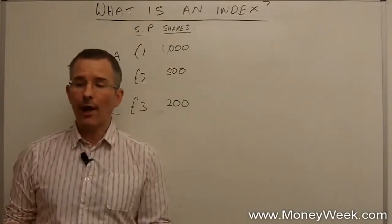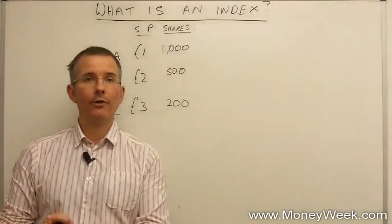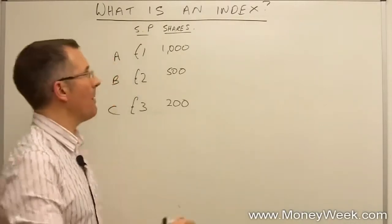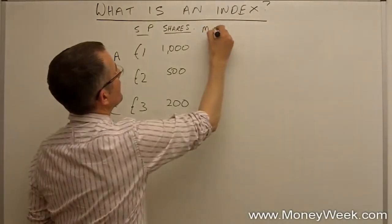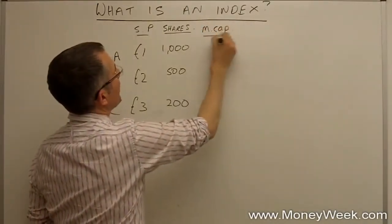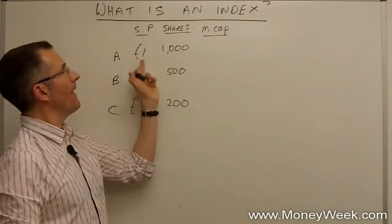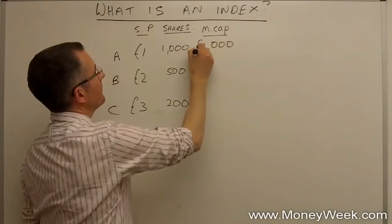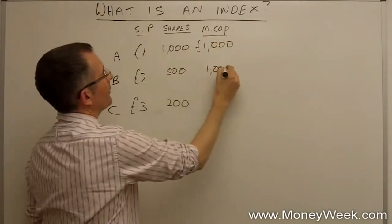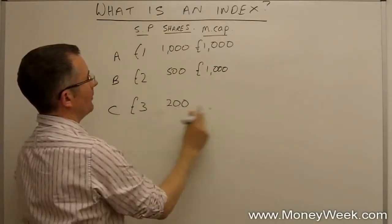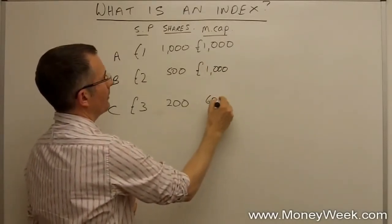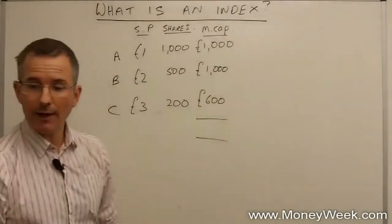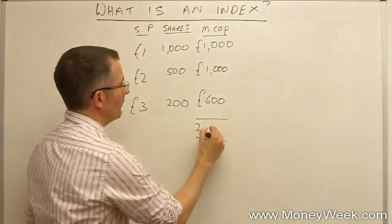From there, we could work out what's called a market capitalisation. We could take the share price, multiply it by the number of shares they've issued that are out there trading, and come up with a market cap. Multiplying that by that is £1,000 for company A, also £1,000 for company B, and £600 for company C. So, the total market capitalisation of these three companies, at the moment, £2,600. The total share prices, £6.